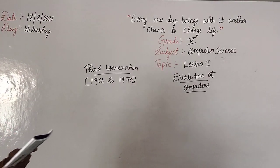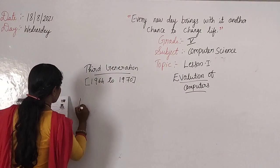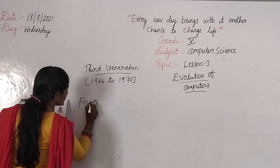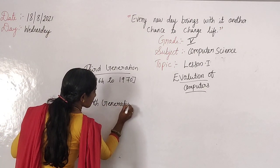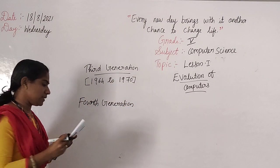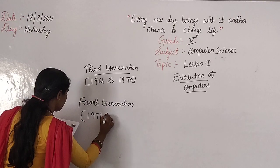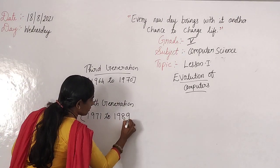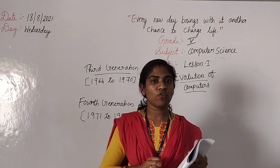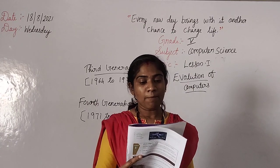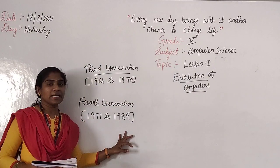Next we have fourth generation. Fourth generation started from 1971 to 1989. That is the microprocessor age. In fourth generation we call it the microprocessor age, started 1971 to 1989.